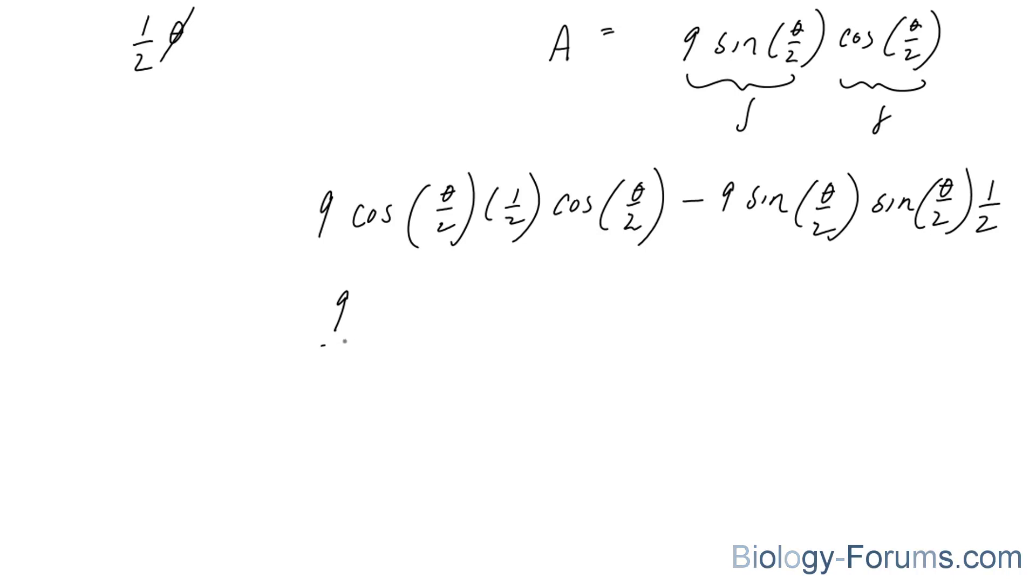We end up with the following: nine over two cosine squared theta over two. And similarly, on the left side, we have nine over two sine squared theta over two. And we can factor out the nine over two to give us nine over two.